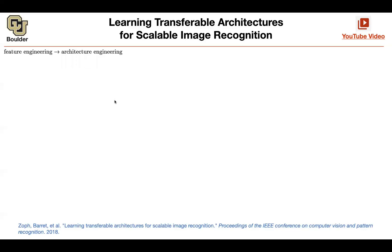The next paper is exactly about designing a better search space. Maybe the first one was going into too many details - what should be the size of my convolution, the filter size, the number of filters, the activation, the residual connections. Maybe that's too many degrees of freedom, and maybe that is good for one particular dataset like CIFAR-10. But what if you want to generalize to whatever architecture you come up with to generalize it to ImageNet?